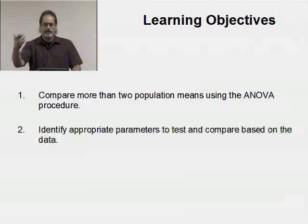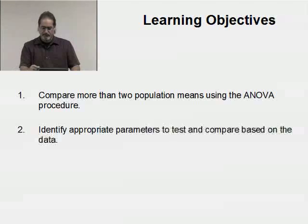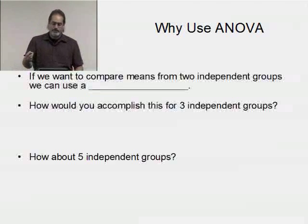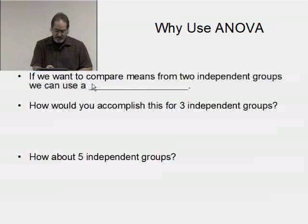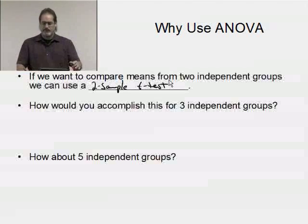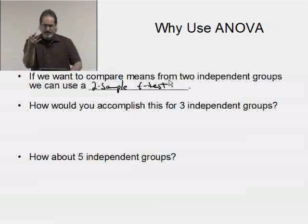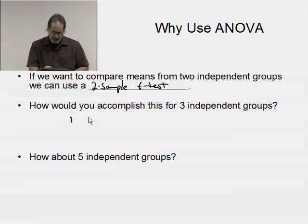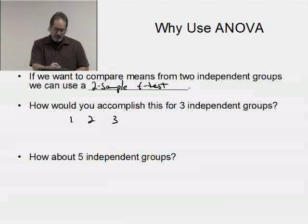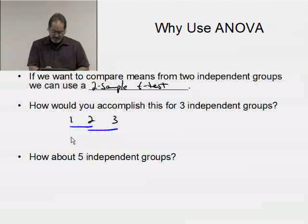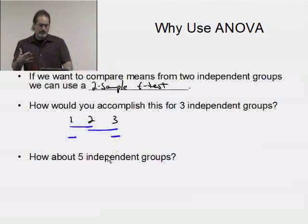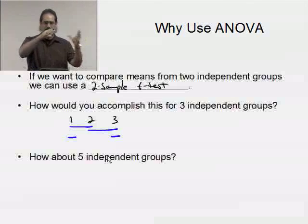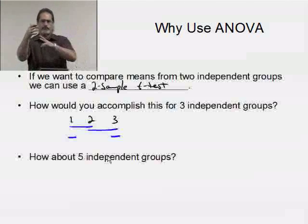Why use ANOVA to begin with? If we want to compare means from two independent groups, we can use a two-sample t-test, assuming all the appropriate assumptions are reasonably satisfied. If I go to three, how would I do this? If this is group one, group two, group three, I could do a t-test between group one and two, a t-test between group two and three, and a t-test between group one and three. So I could actually do three different two-sample t-tests.